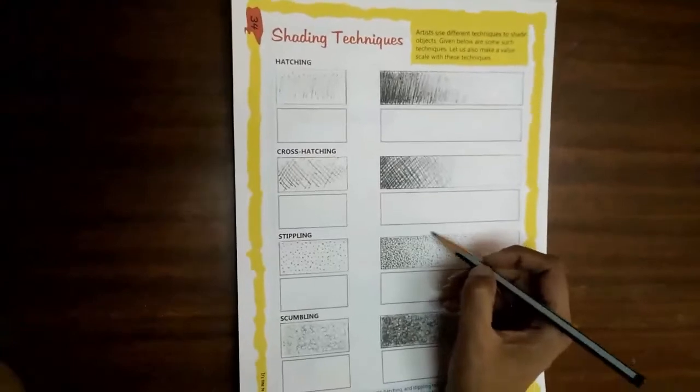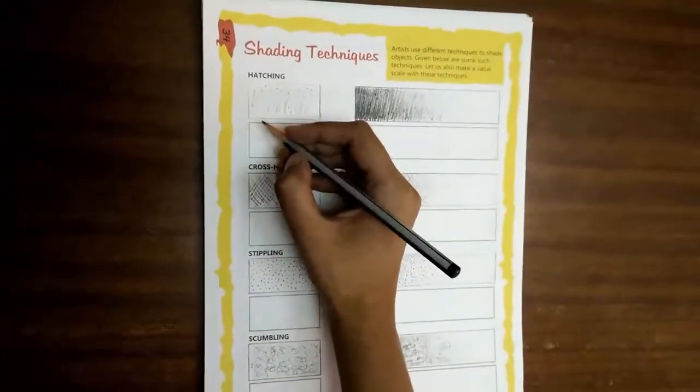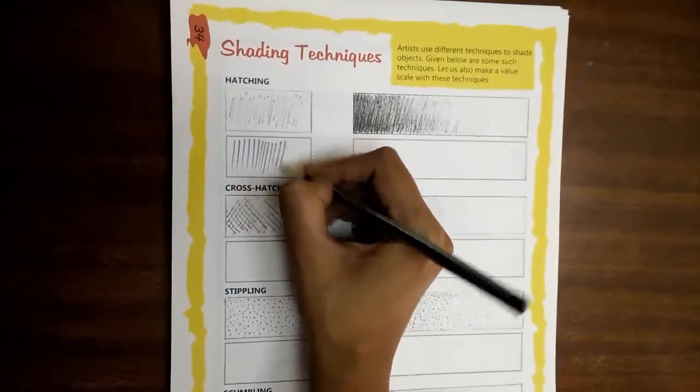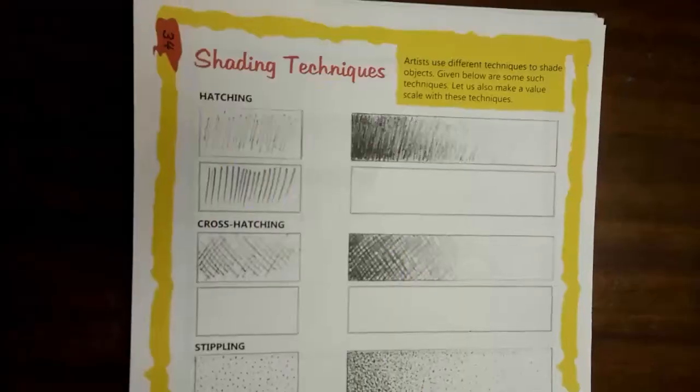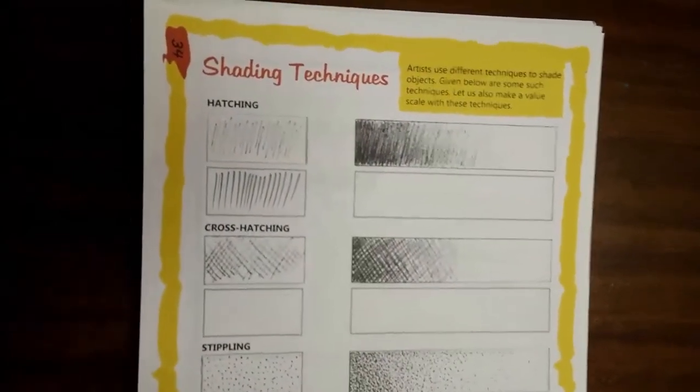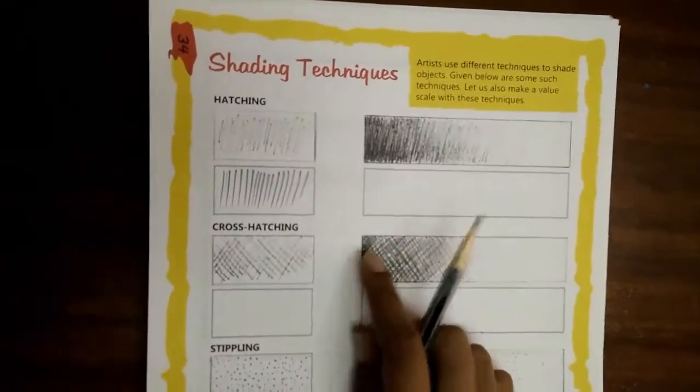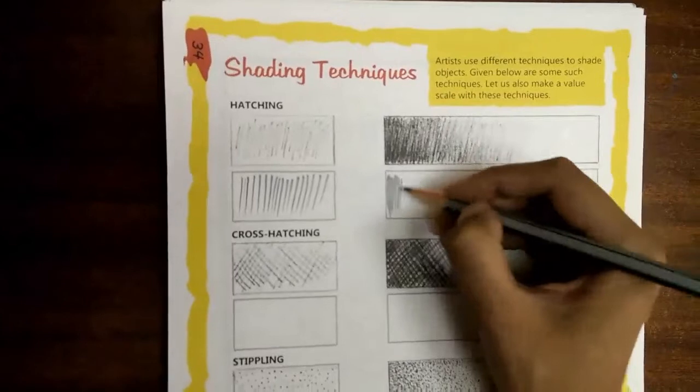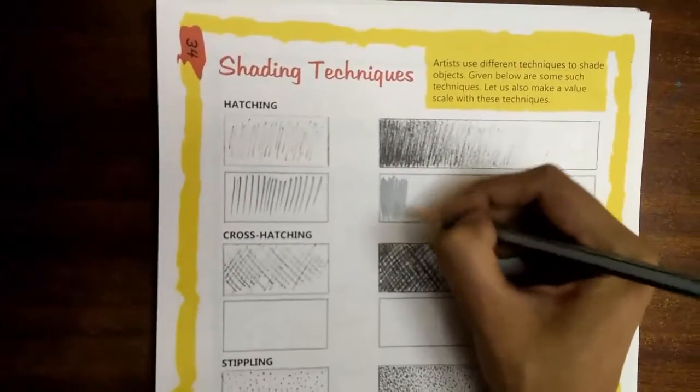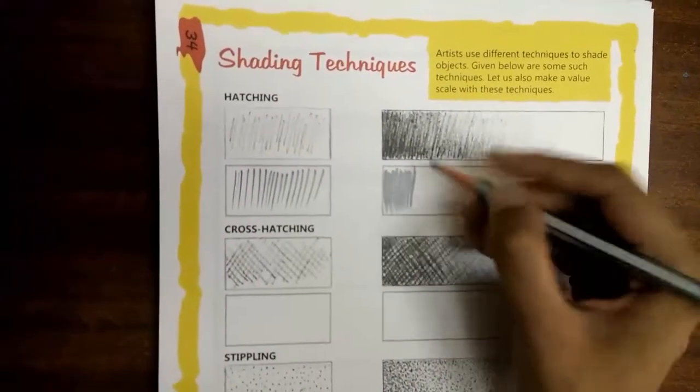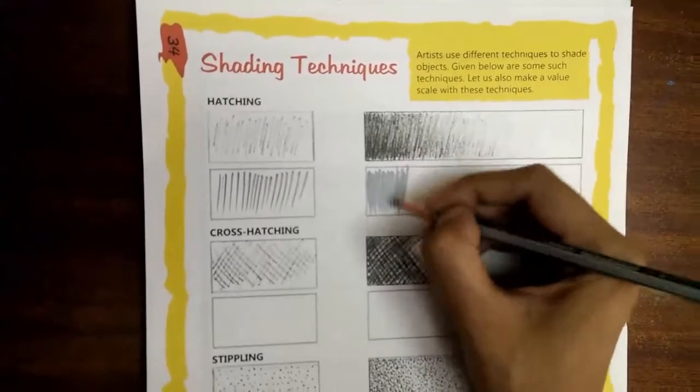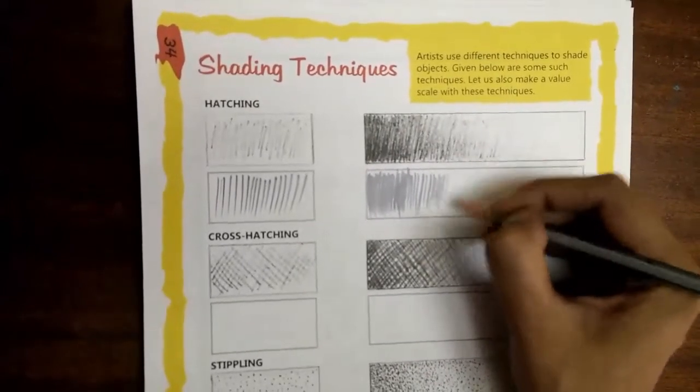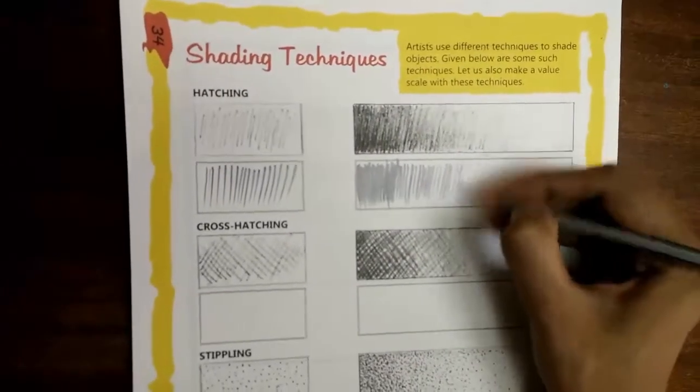First, we have the hatching technique. That is making equidistant lines. Let us make a value scale with this technique. That is we shade this area dark to light. We make the lines together in the darker area and slowly the lines get sparse to give a lighter shade.